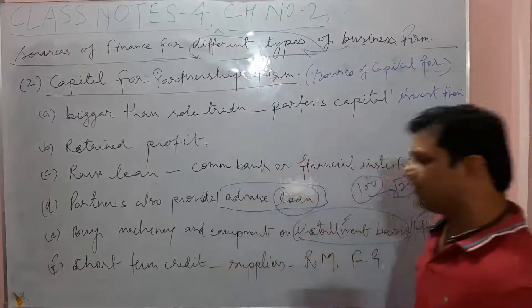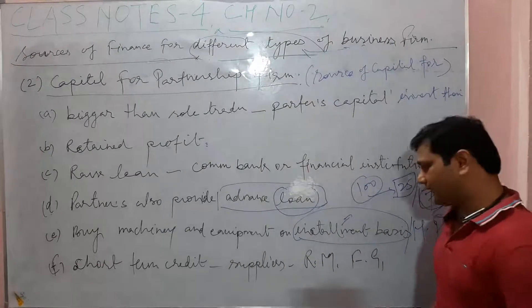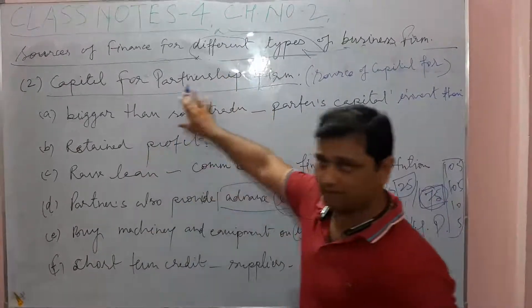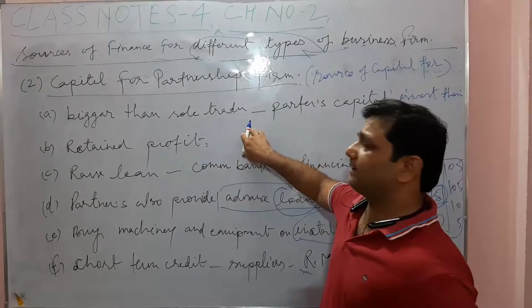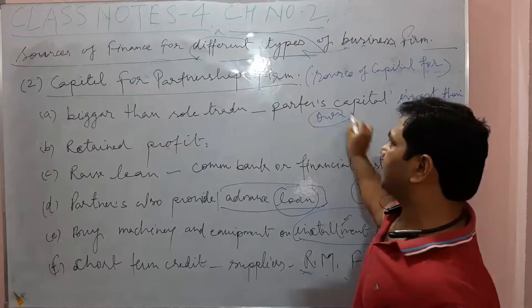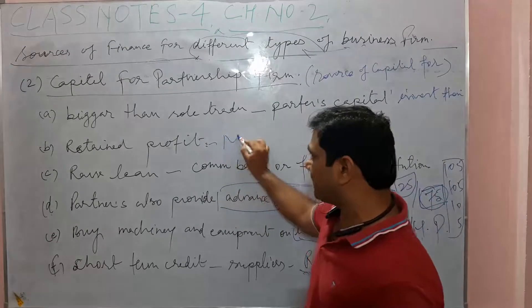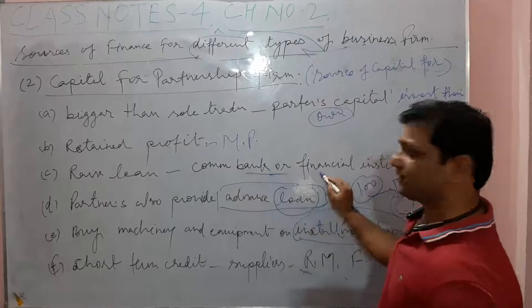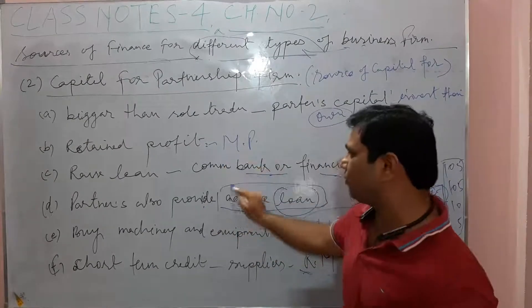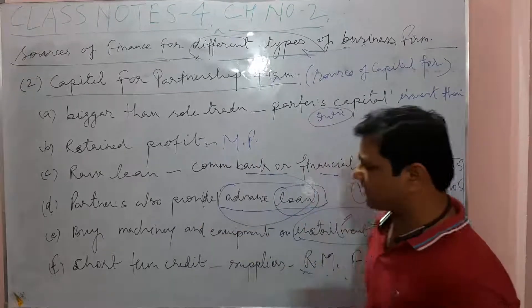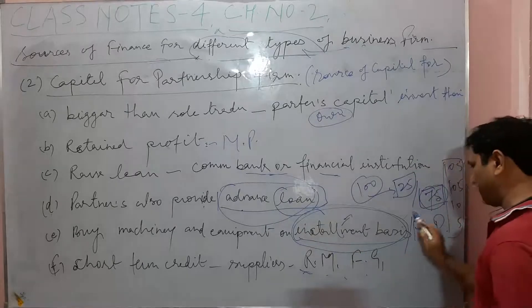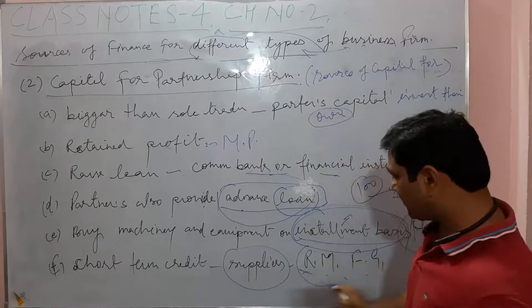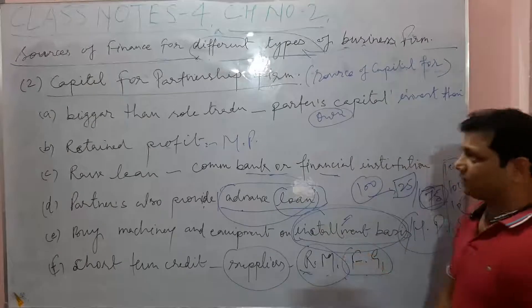The fifth point is short-term credit, which can be used for purchasing raw materials or finished goods. To recap the six sources for partnership firm: partners invest capital, retained or net profit is reinvested, loans from commercial banks or financial institutions, partners themselves provide loans, buying on installment or hire purchase basis, and buying from suppliers on short-term credit.